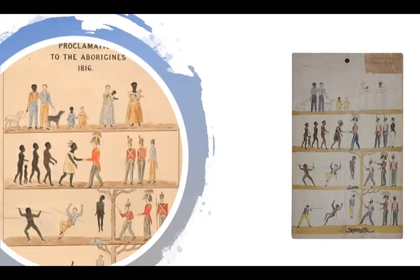But I think there's something else going on here. You can read these images as making a series of statements: because we are all the same, because you consent to our government, therefore we will give you equality under the rule of law. But you can read it the other way too — as a promise deferred. When you are the same as us, when you dress like us, when you wear the same clothes, when you consent to being governed by us, when you become good subjects of the British crown, then we will give you the rule of law. But until you do, all bets are off.